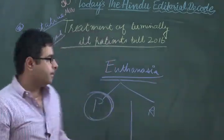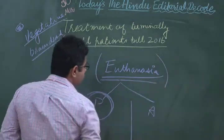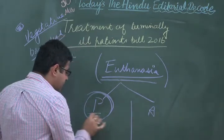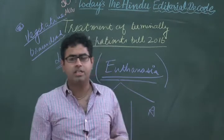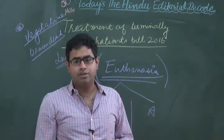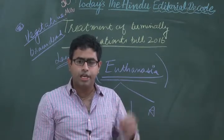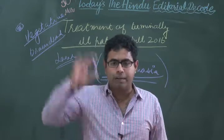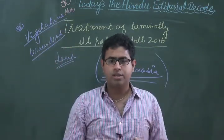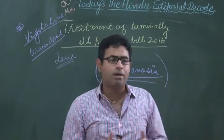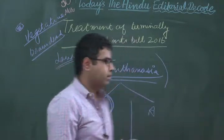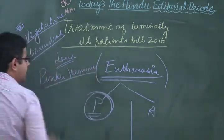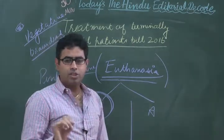As far as euthanasia is concerned, we don't have any specific law on it in India. In India, only passive euthanasia is allowed; active euthanasia is not allowed. Passive euthanasia was allowed by the Supreme Court with respect to the Aruna Shanbaug case. She was raped in the 1970s and was in a state of coma for about 43 years total.